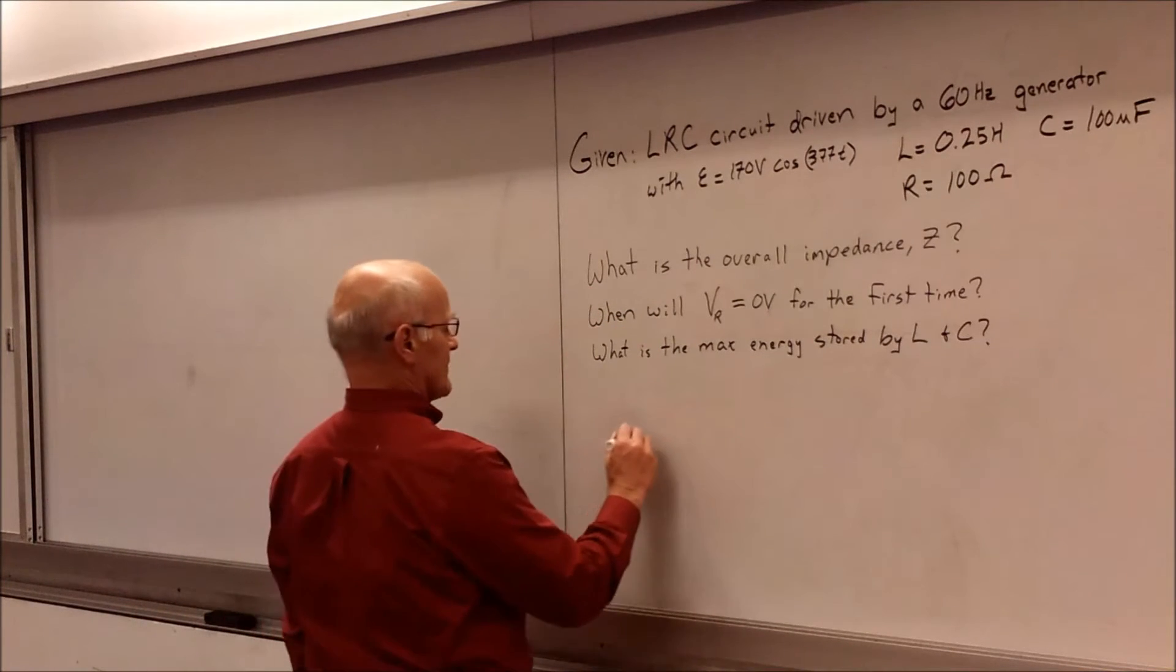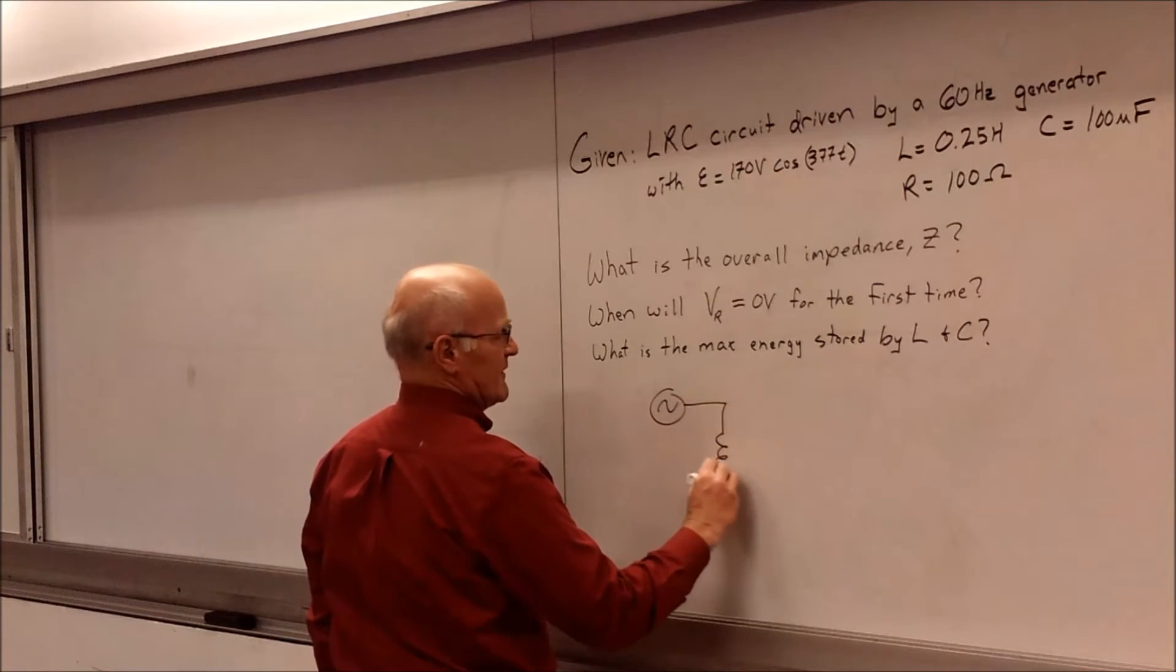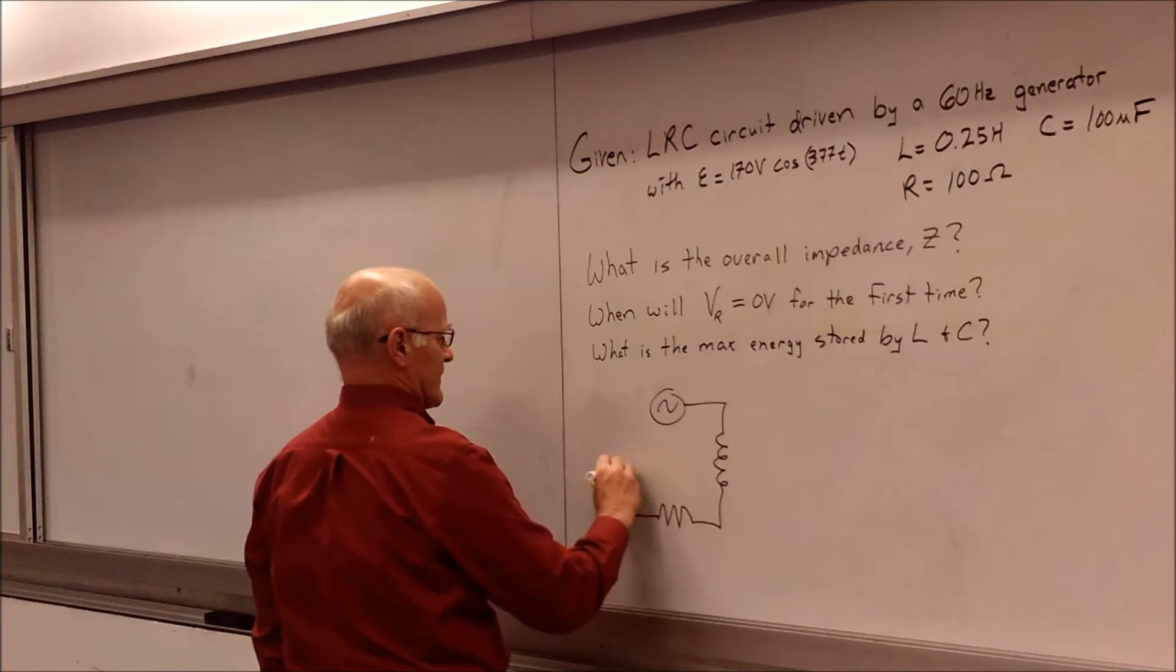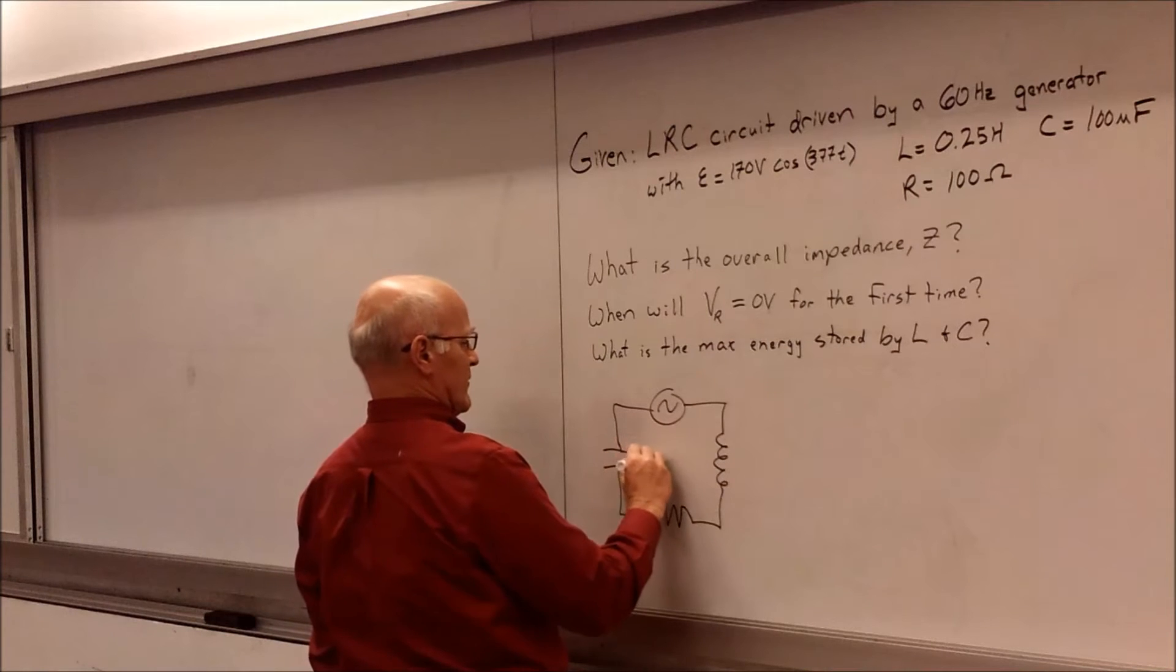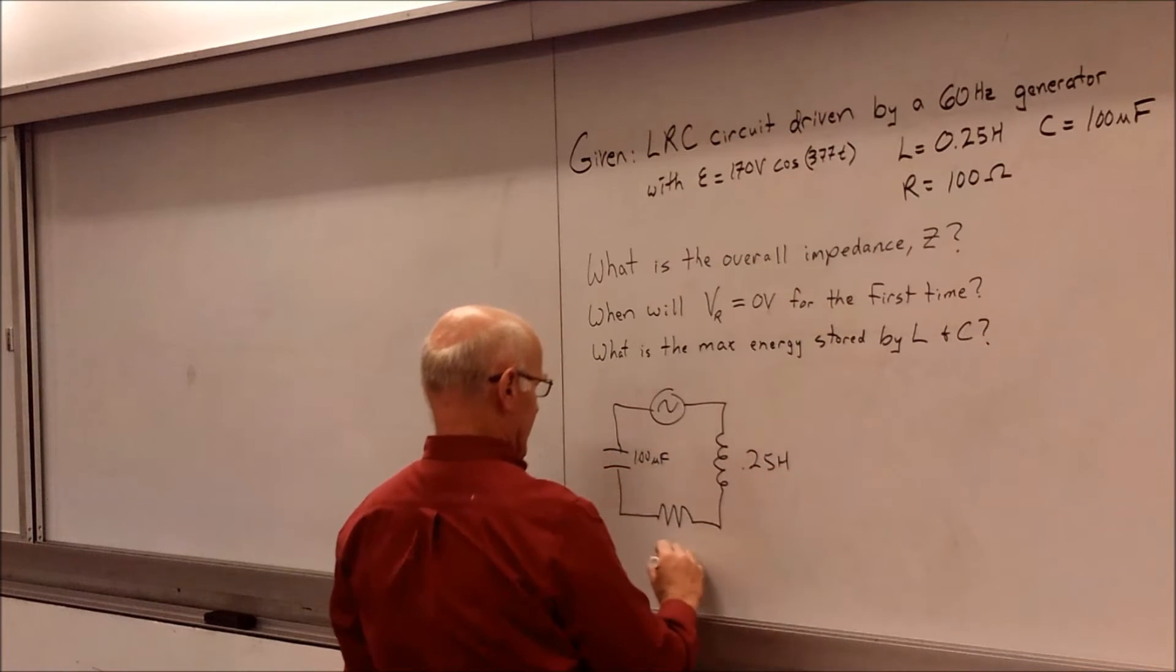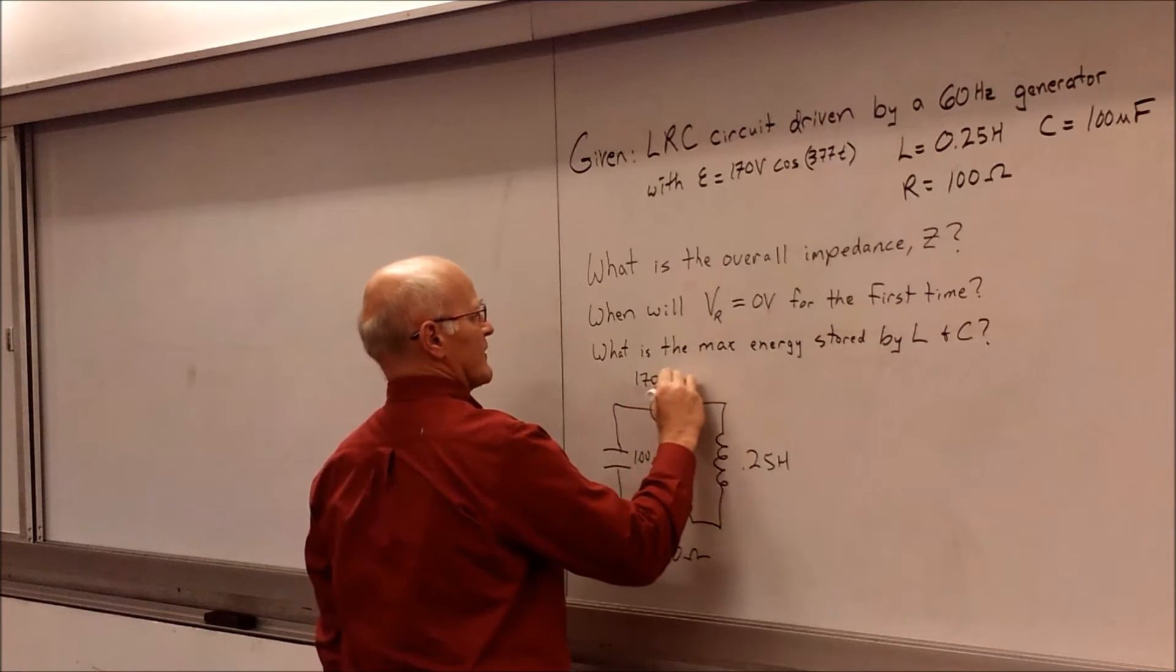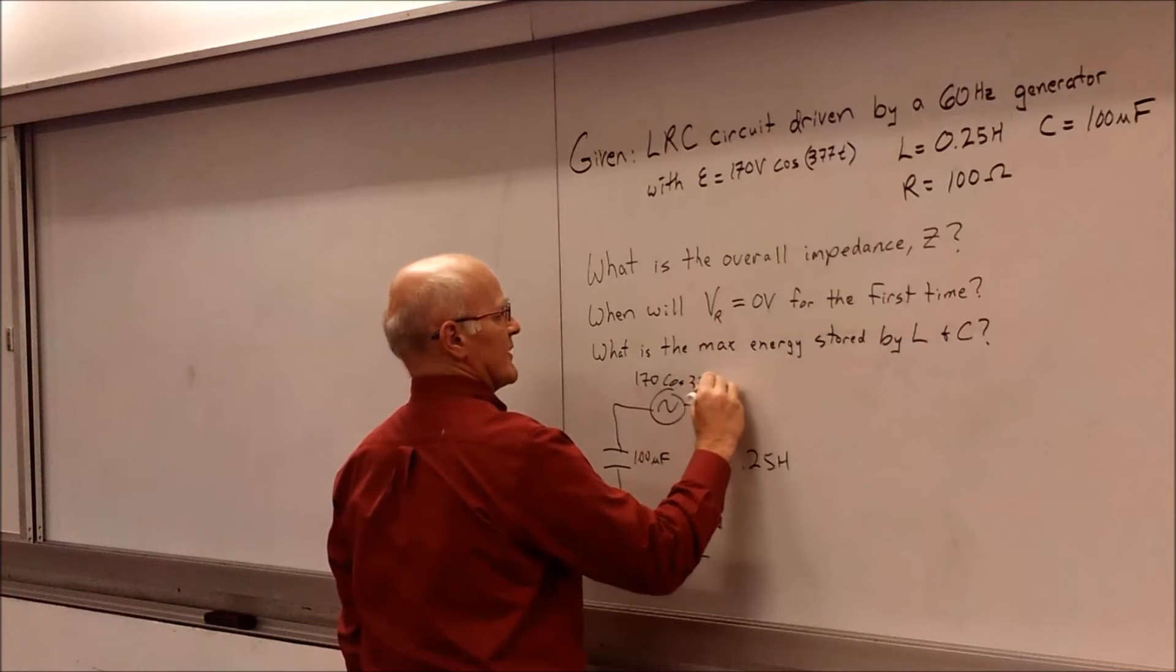So we can go ahead and draw our make-believe circuit. Add our inductor, our resistor, and then our capacitor. And we can label them 100 microfarads. Our inductor is 0.25 henrys. And our resistor is 100 ohms. And then our voltage, 170 cosine 377 times time.